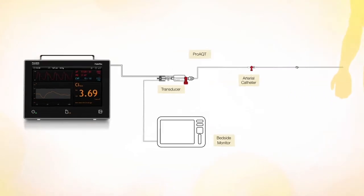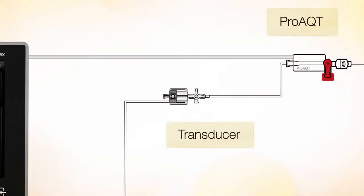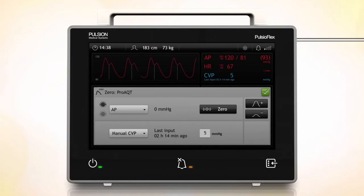To zero the pressure signal, tap the pressure curve area. Open the arterial system to atmosphere for zeroing. The baseline appears on the monitor. Tap the zero button.